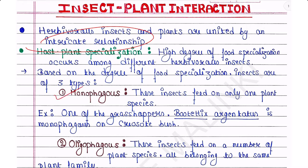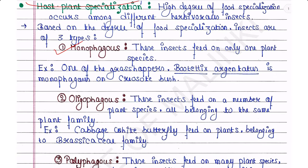First is monophagous — these insects feed on only one plant species. For example, one of the grasshoppers, Bootettix argentatus, is monophagous on creosote bush, meaning these grasshoppers only take food from creosote bush. Second is oligophagous — these insects feed on a number of plant species all belonging to the same plant family.